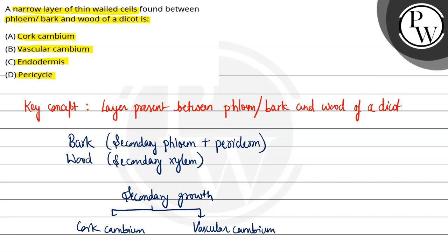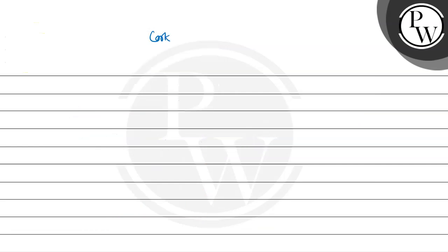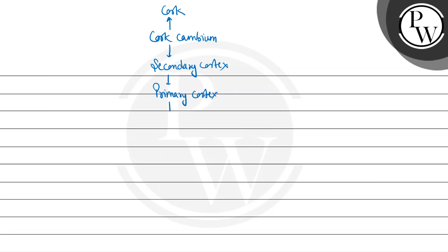If we look at the layers from outer side to inner side, then the outermost is cork cambium. On the upper or periphery side is cork, and the inner side is secondary cortex. Then comes primary cortex, and at the innermost part of primary cortex is endodermis.